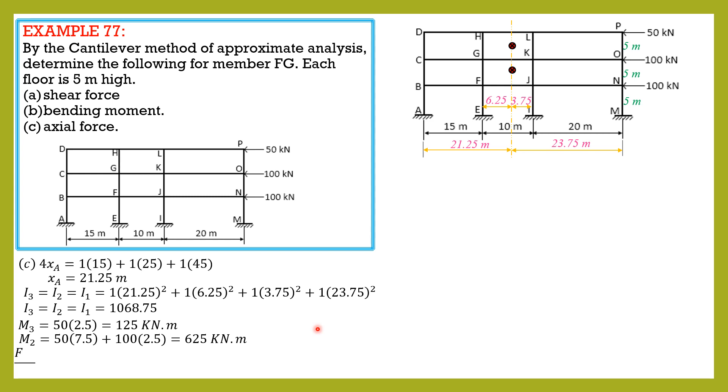For stress diagram, force in column CD over area 1, that's the stress, equals moment in level 3, which is 125, then C or X distance from neutral axis 21.25 over moment of inertia. So FCD can be computed. It is equal to 2.485 kilonewtons.